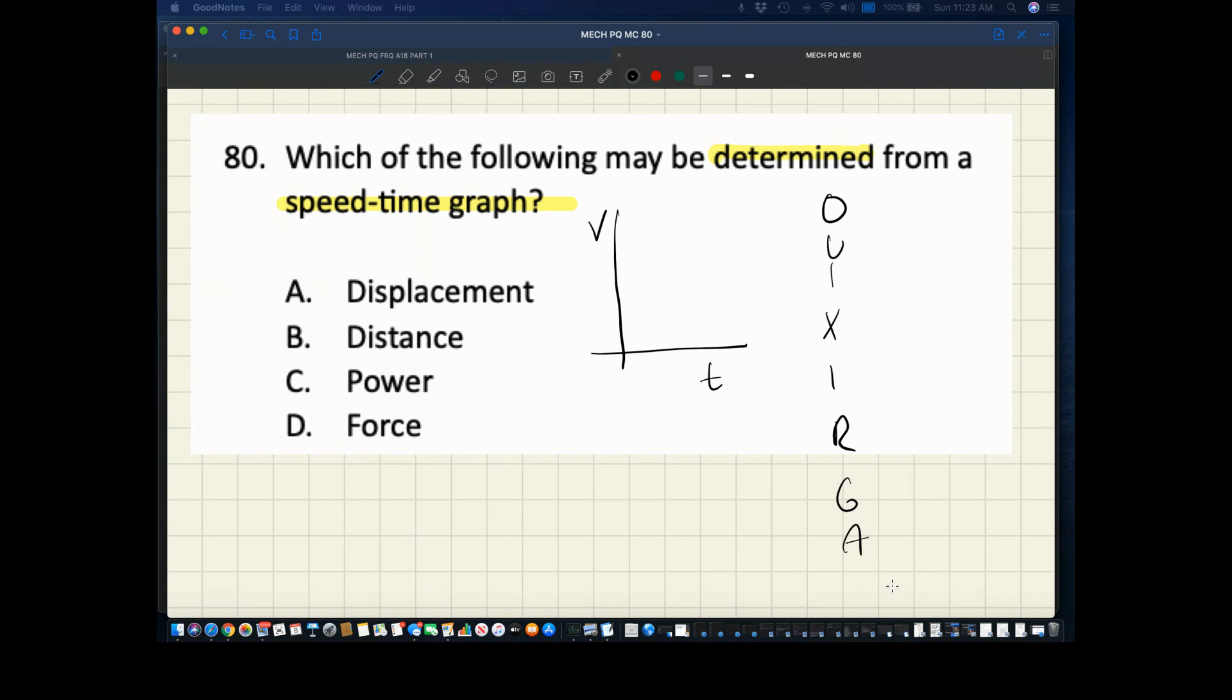So the origin in this case doesn't really matter because it's not context specific, so we don't need to deal with that. Y-axis, x-axis, intercepts.